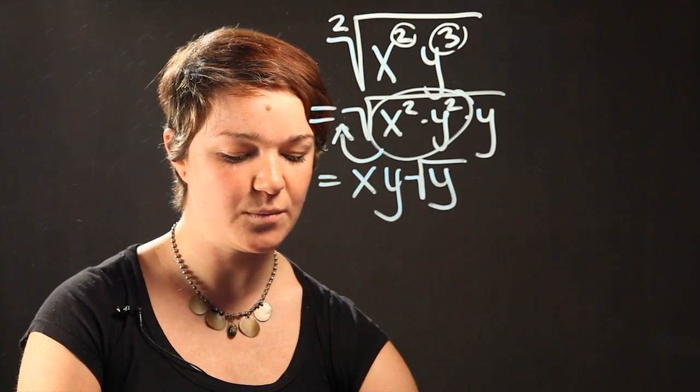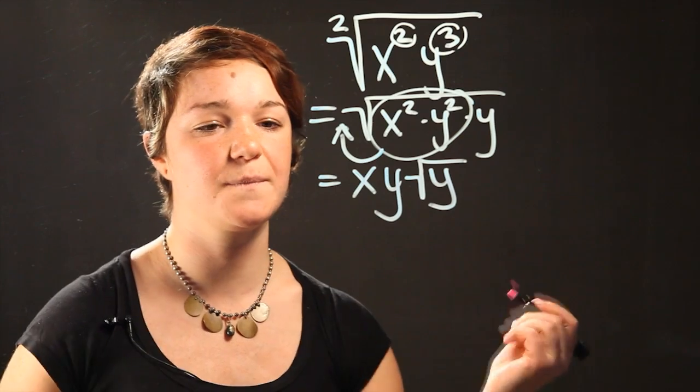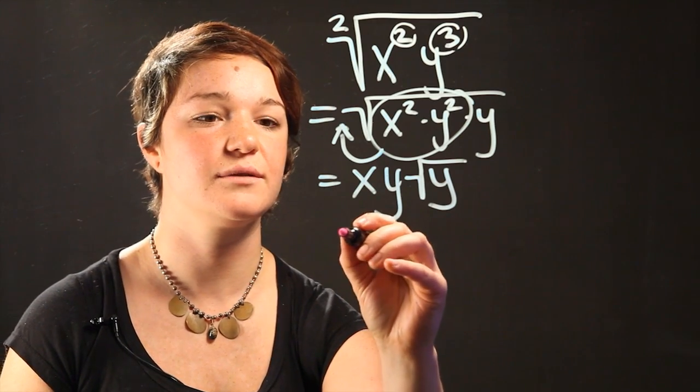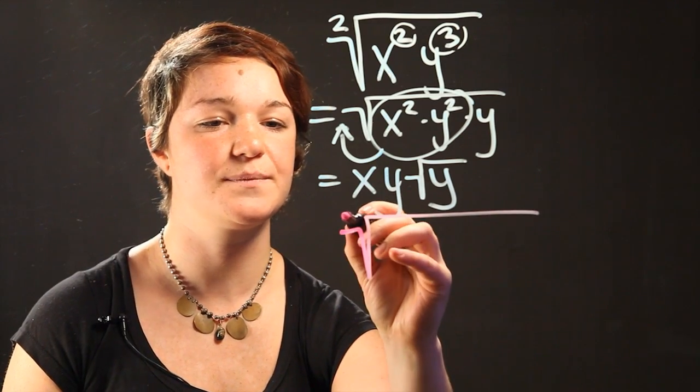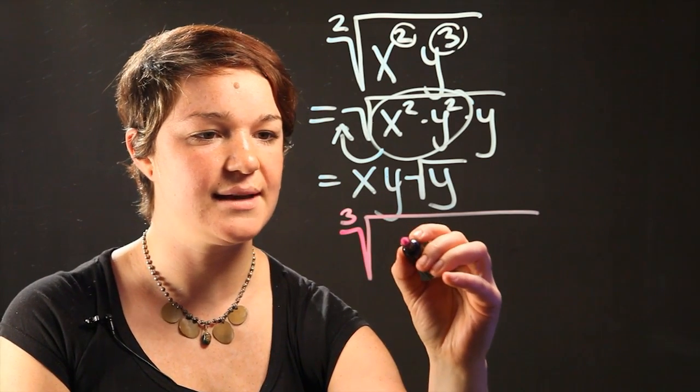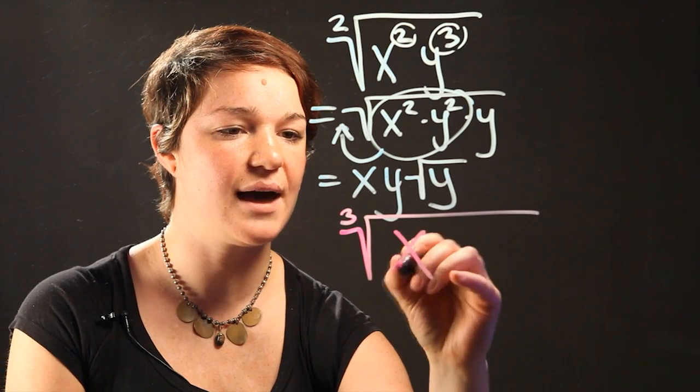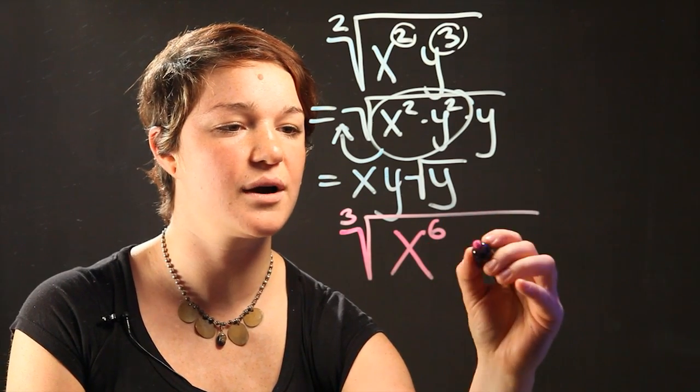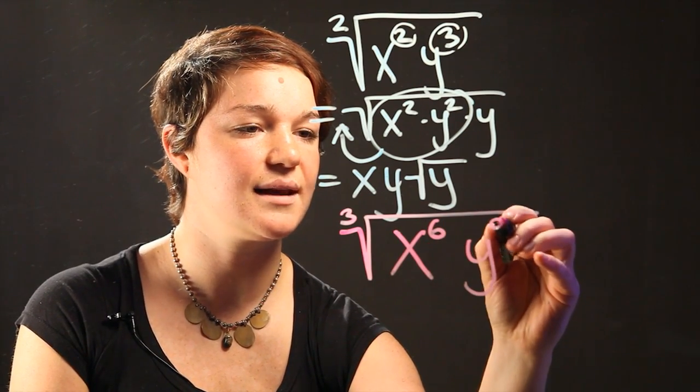Now let's do a slightly more difficult question where we have a cubic root. So in this case the index is the power 3, and inside the radicand we have x to the sixth power and y to the ninth power.